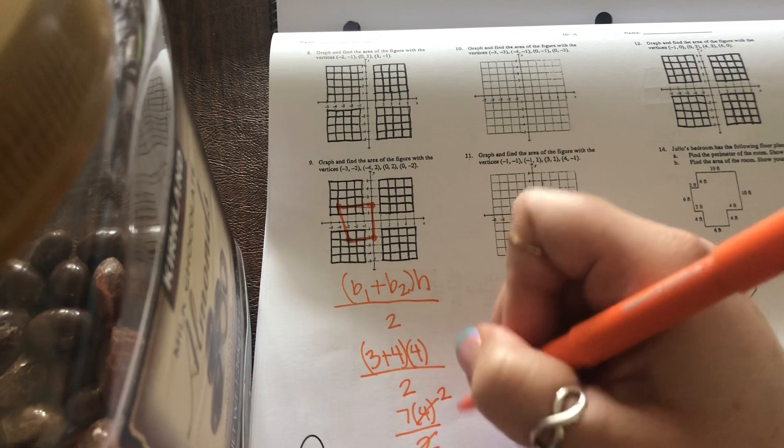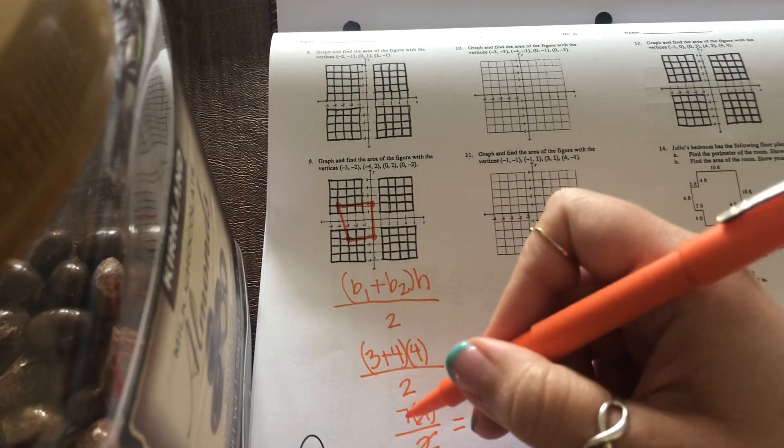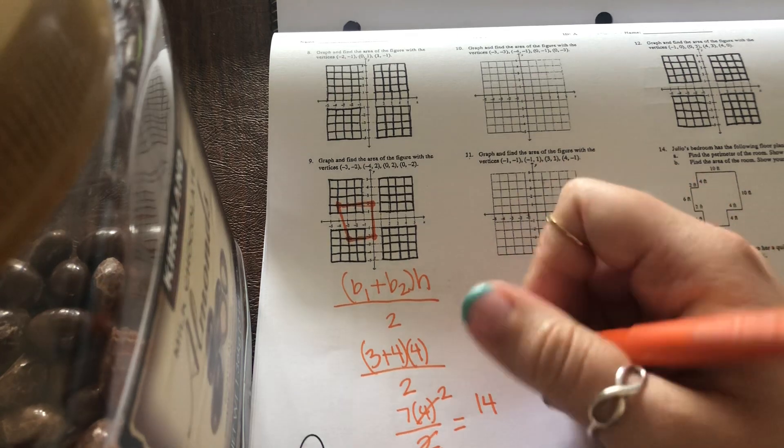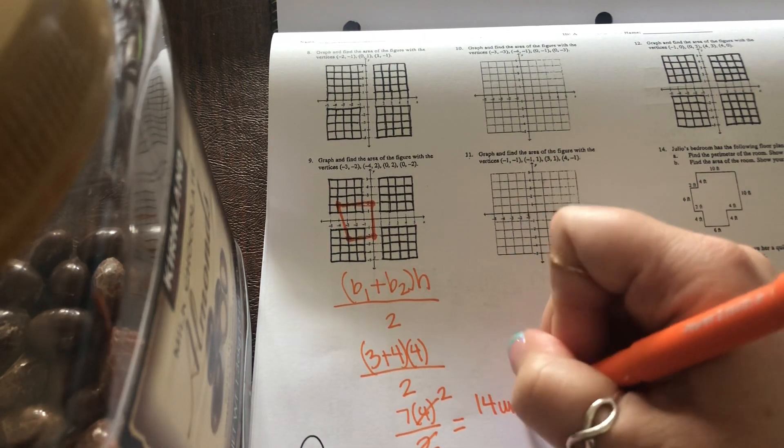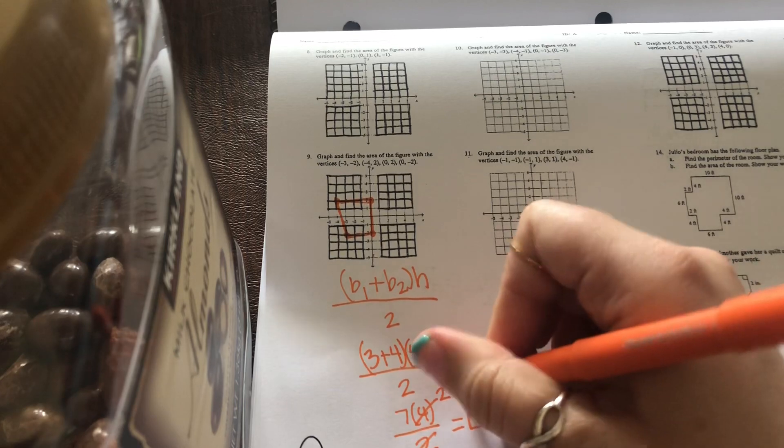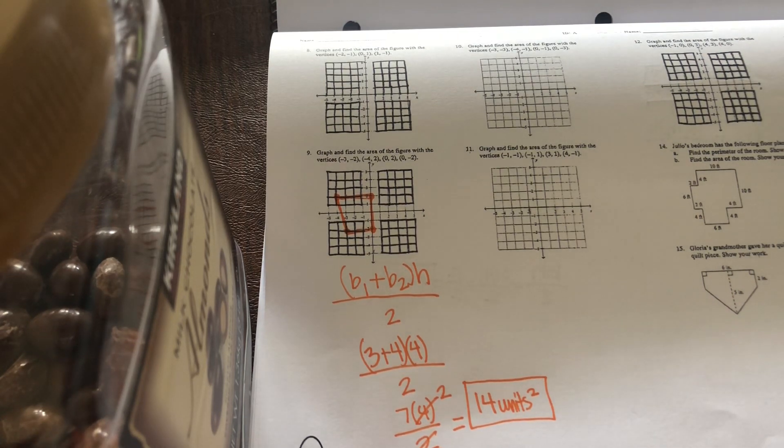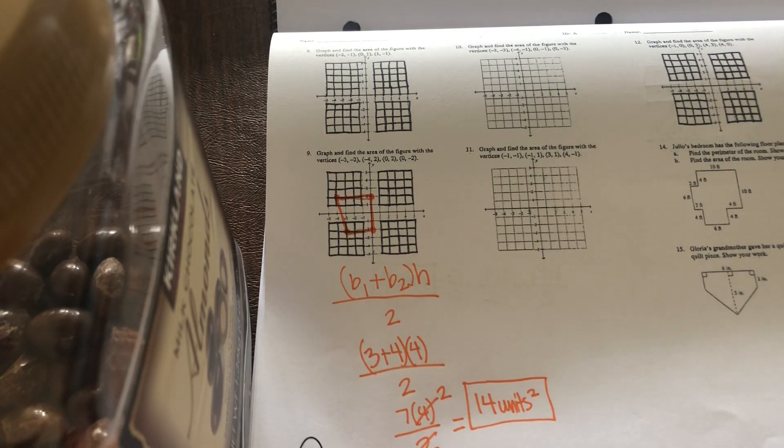Well, three plus four is seven. And then you could go seven times four is 28 and 28 divided by two is 14. Or you could have crossed, canceled, reduced. And then you got seven times two is 14 over one is 14. And again, they didn't tell me units. So we're just going to put units squared. Now, number eight was a triangle, but nine, 10, 11, and 12. I'm going to give you a hint. When you graph them, you should get trapezoids.